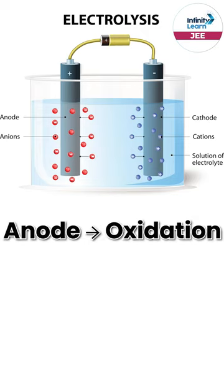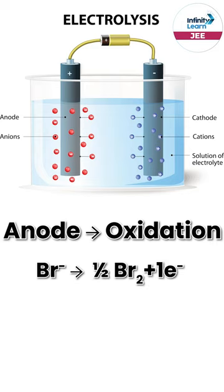What happens on the anode? Oxidation. Br⁻, and if it exists, then you have to make Br₂.